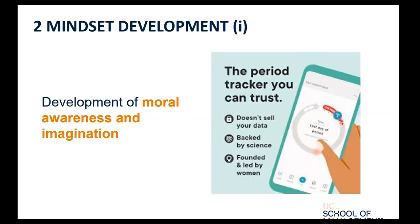Moving on to the second part of my presentation — developing an ethical mindset in students. My overall goal is to focus on enhancing moral awareness and moral imagination around the ethical implications of AI technology. Moral awareness means that when we see a technology we can recognize that it has moral or ethical consequences — we don't always think about this when we encounter a new AI gadget. Moral imagination is our ability to see the chain of consequences of technologies: X leads to Y leads to Z, at individual and societal level. I want to trigger this higher level of awareness and imagination among students.